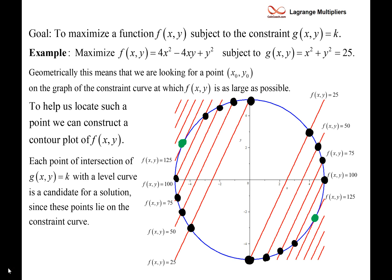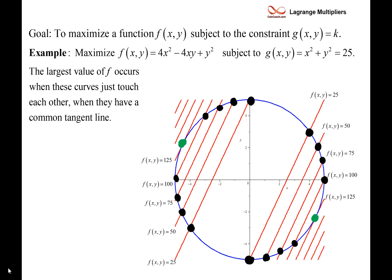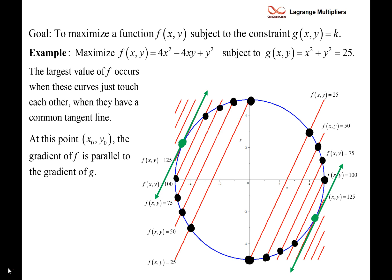I have marked off in green the altitude or output of the function f at 125. The largest value of f occurs when these curves just touch each other — when they have the same tangent line. I have my tangent line to the circle and my tangent line to the level curve. The level curves happen to be straight lines in this picture, so the tangent to the straight line in red would also be this green line. At this particular point x naught, y naught, the gradient of the function f is parallel to the gradient of the function g.